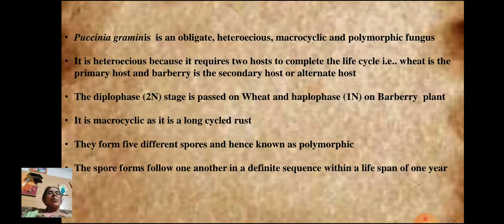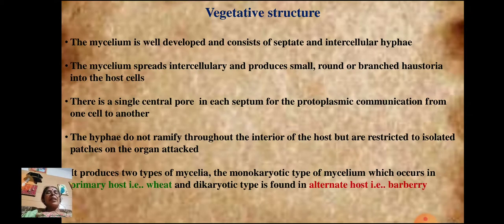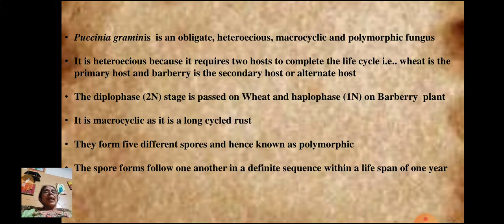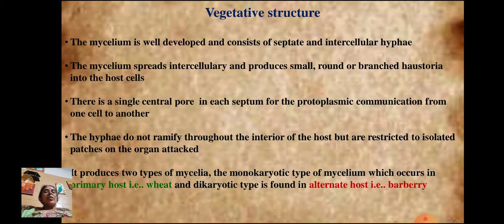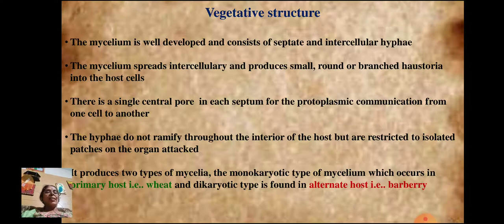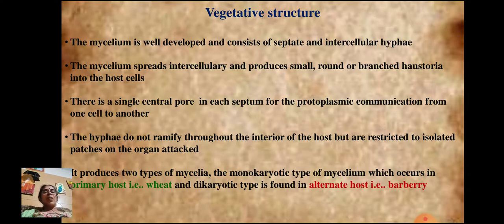Coming to the vegetative structure, the mycelium is well developed and consists of septate and intercellular hyphae. The mycelium spreads intercellularly to produce small round or branched haustoria into the host cells. There is a single central pore in each septum for protoplasmic connection from one cell to another. The hyphae do not ramify throughout the host interior but are restricted to isolated patches on the attacked organ.